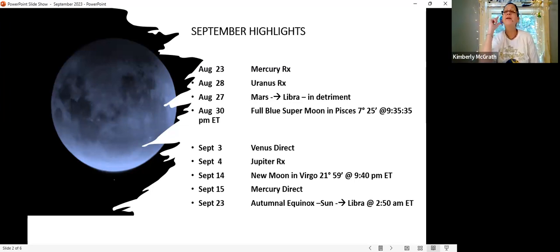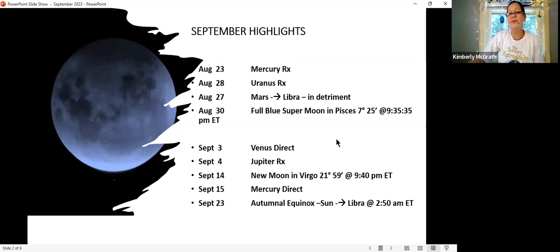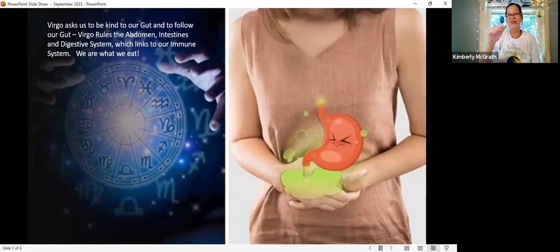I will say that Sunday, August 27th, when Mars is moving into Libra, before that, the sun will be opposing Saturn. That could feel like our power is being taken away, maybe somebody is bullying us. You'll see in the next slide when I bring in the full moon, or one of the slides down the way, you'll see how that lines up.